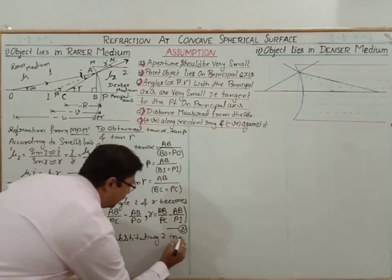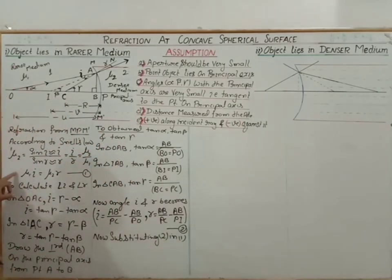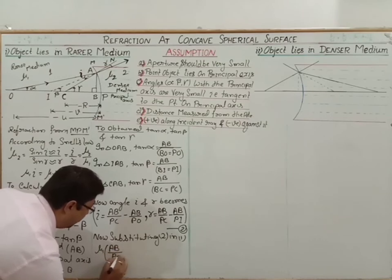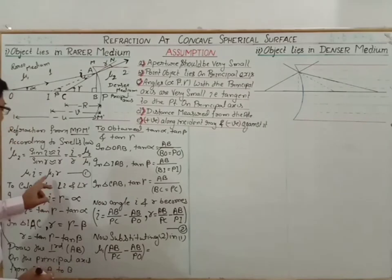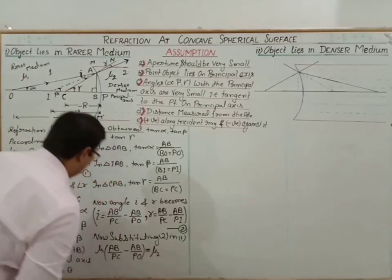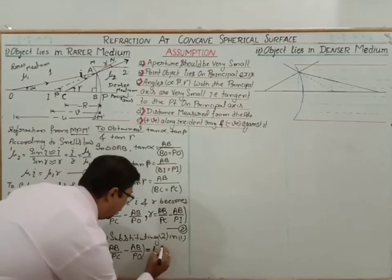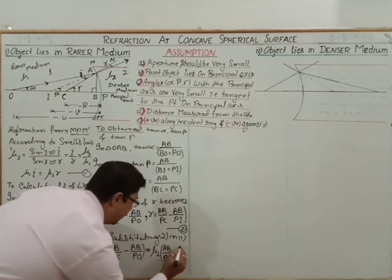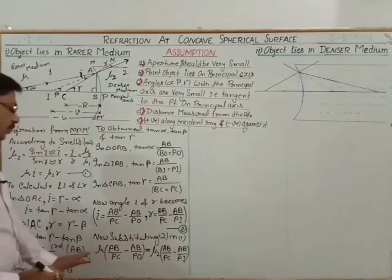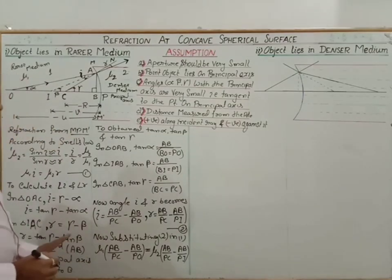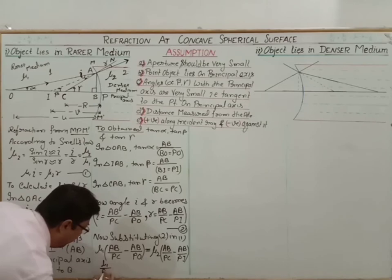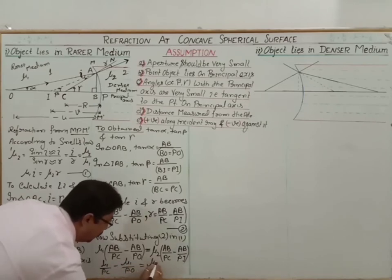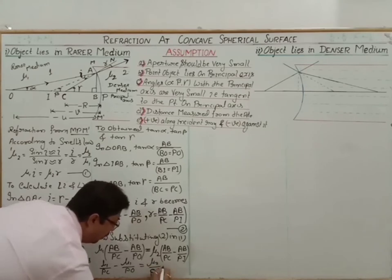Since AB is common to both sides, we cancel AB. The result is: mu1/PC − mu1/PO = mu2/PC − mu2/PI. Rearranging by moving PC terms together: minus mu1/PO + mu2/PI = mu2/PC − mu1/PC, which gives minus mu1/PO + mu2/PI = (mu2 − mu1)/PC.